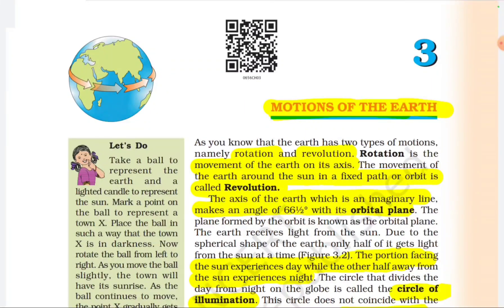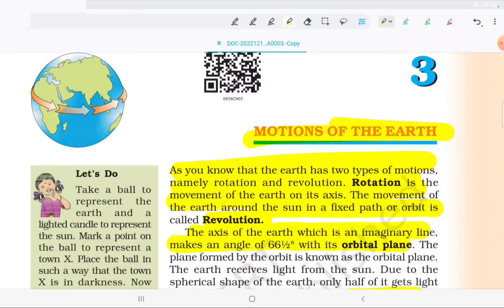In this chapter, we will start the third chapter: Motion of the Earth. There are a lot of motions — Rotation, Revolution, Summer Solstice, Winter Solstice, and Equinox. Let's start. Basically, there are two motions of the earth. First, revolution. Second, rotation.